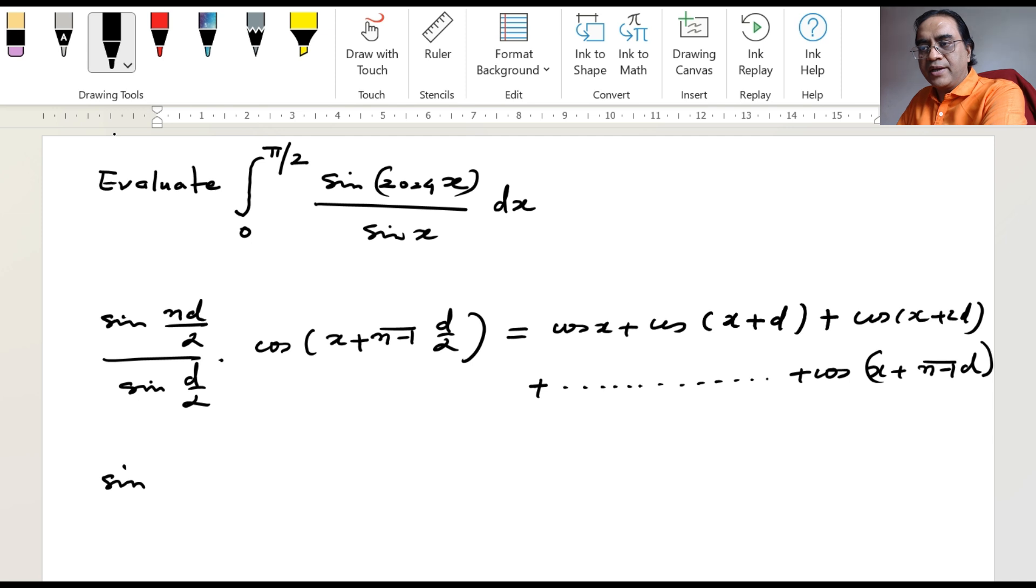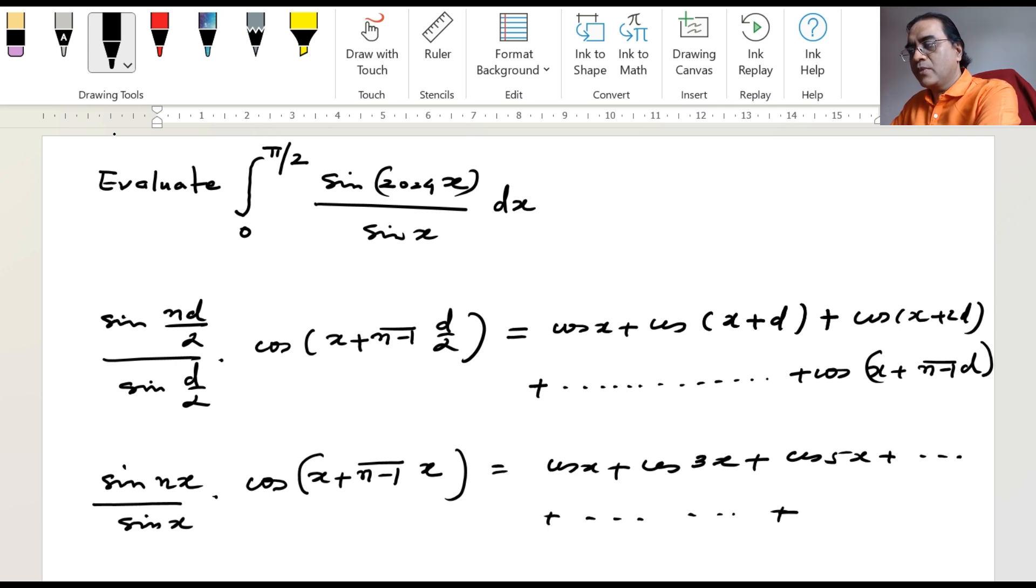We have got sin nx divided by sin x times cos x plus n minus 1 times x, and then we have cos x, cos of 3x, because d by 2 is x so d is 2x, and then cos 5x and so on up to cos 2n minus 1 x.